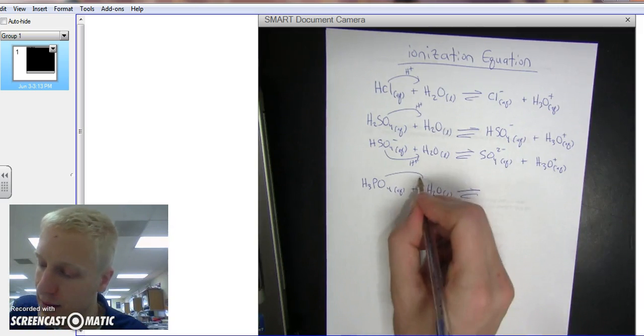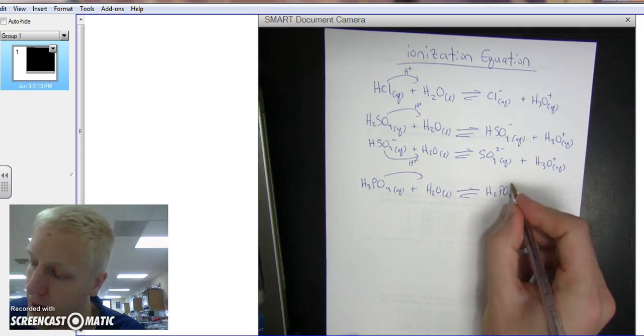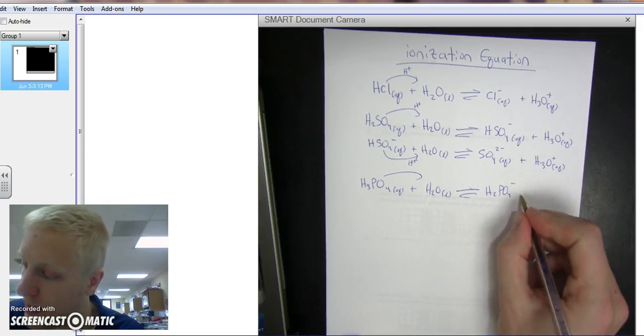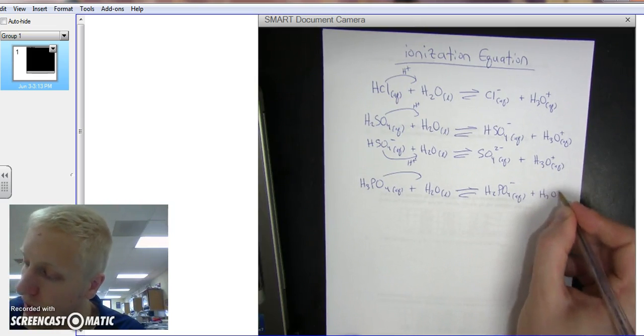Alright, and we have this H3PO4, it's going to give an H to form H2PO4 with a minus one because it lost a positive H, that's aqueous, and this water forms H3O+.